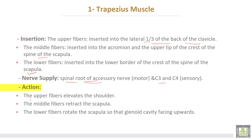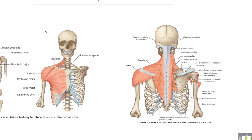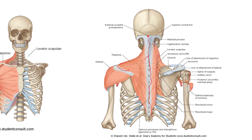The action of trapezius: the upper fibers elevate the shoulder, the middle fibers retract the scapula, and the lower fibers rotate the scapula so that the glenoid cavity faces upward. The trapezius origin is from the superior nuchal line and external occipital protuberance, ligamentum nuchae, all thoracic spines and supraspinous ligaments. It inserts into the posterior surface of the lateral part of the clavicle, acromion, and upper lip of the crest of the spine of the scapula.